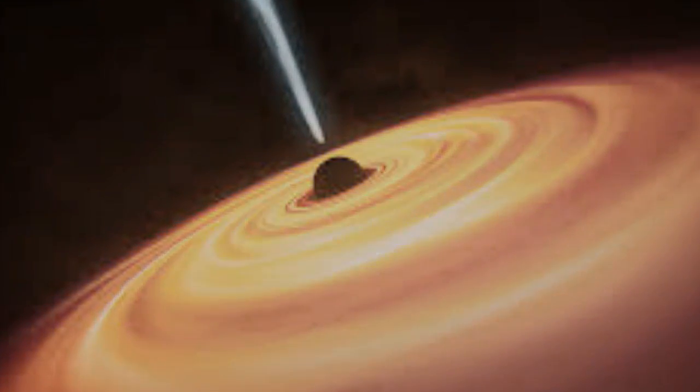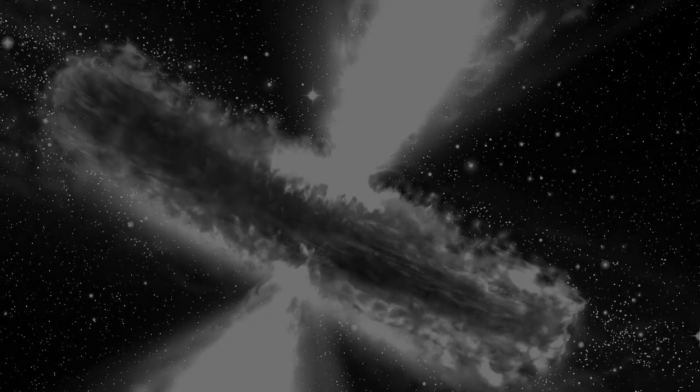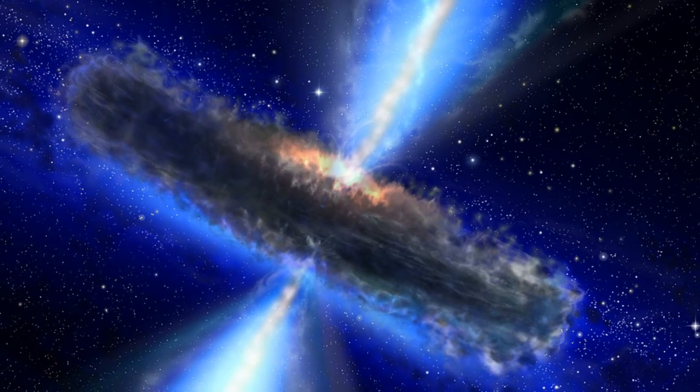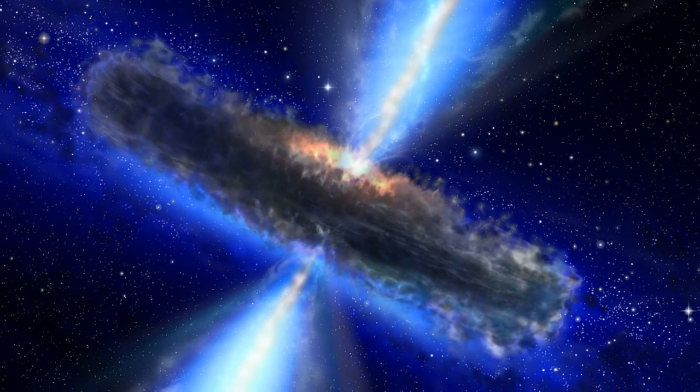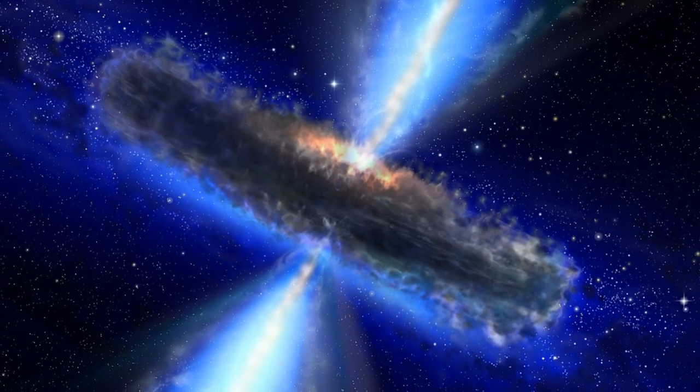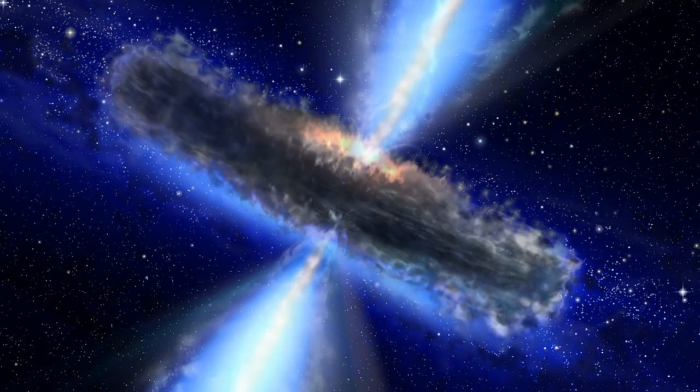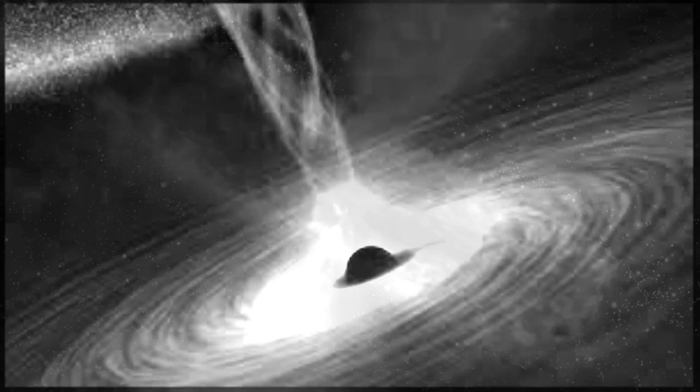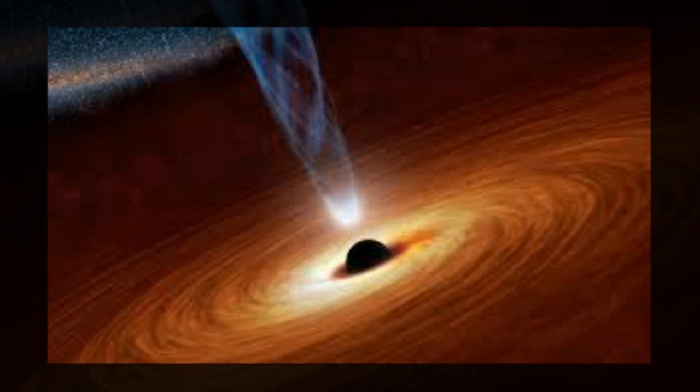If only one black hole were present in the center of the quasar, the whole accretion disk made of surrounding hot gas would glow in ultraviolet rays. Instead, the ultraviolet glow of the dusty disk abruptly drops off towards the center.